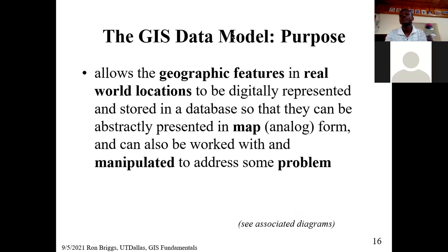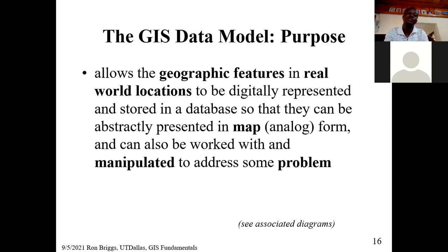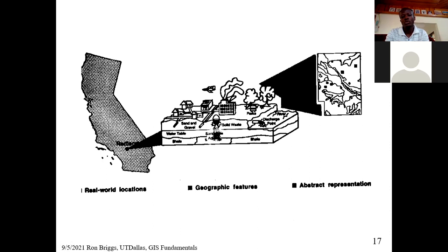The term 'data model' — it's nothing scary. It allows features in the real world and their locations to be digitally represented. Something on the ground and you want to put it into a virtual world. You have to find a way to represent the objects. That is the data model — simple as that. That is how GIS handles the data model. It allows features in the real world to be digitally represented and stored in a database, so they can be abstractly represented in a map or manipulated to create some product.